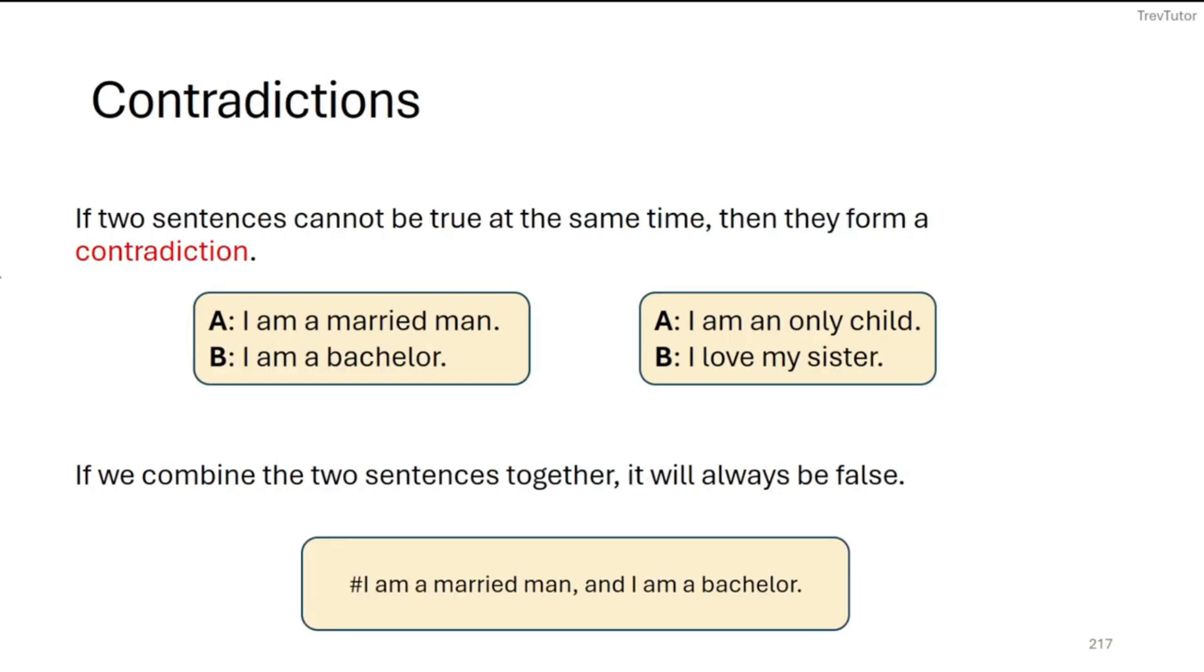For contradictions, we're looking at sentences that both cannot be true at the same time. So for example, I am a married man and I am a bachelor. If you're a married man, by definition, you're not a bachelor because a bachelor is an unmarried man. So these two sentences together form a contradiction.